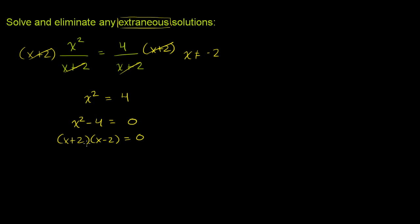And then if this is equal to 0, if the product of two things are equal to 0, that means either one or both of them are equal to 0. So this tells us that x plus 2 is equal to 0, or x minus 2 is equal to 0. If you subtract 2 from both sides of this equation, you get x is equal to negative 2.